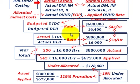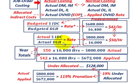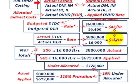Now for our actual amount: our actual total indirect cost was $800,000, and our actual direct labor hours were 16,000. So that gives us an actual overhead rate of $50 per hour.